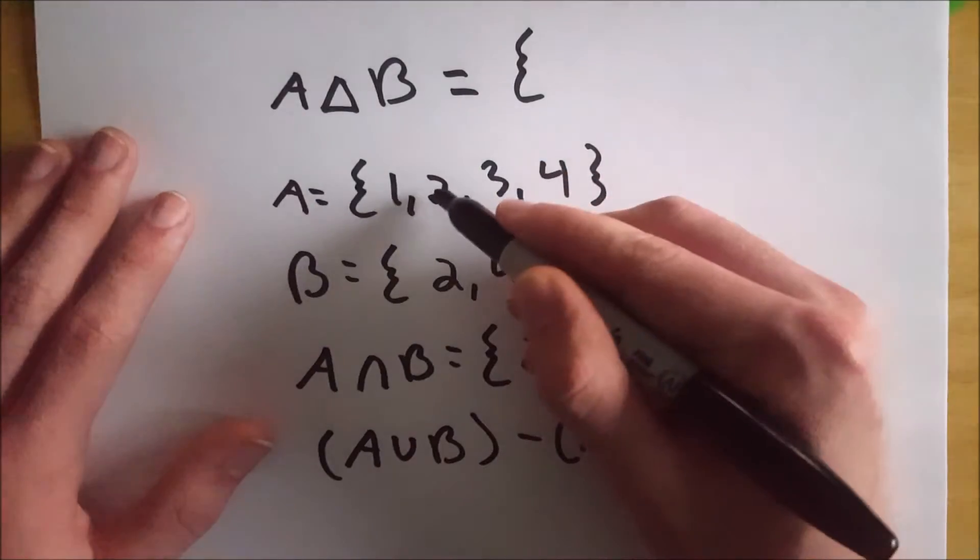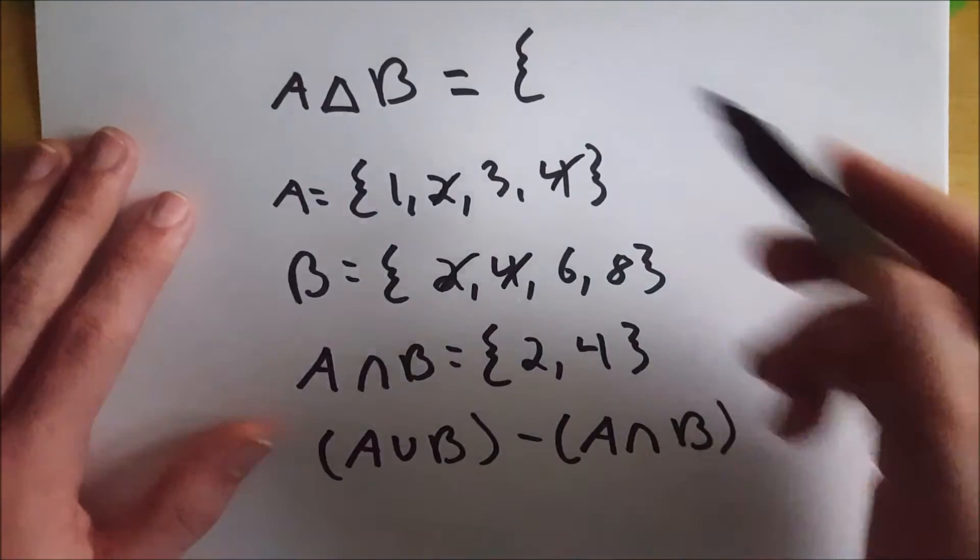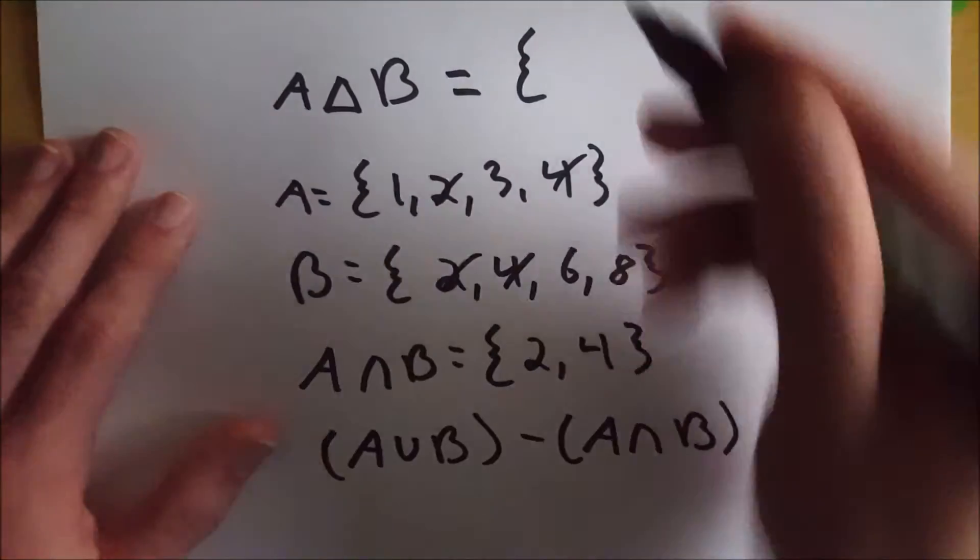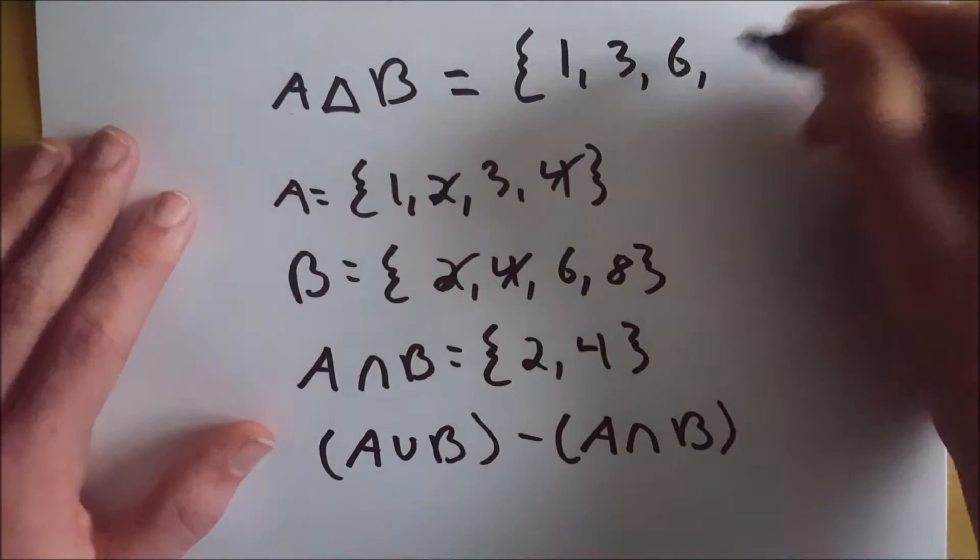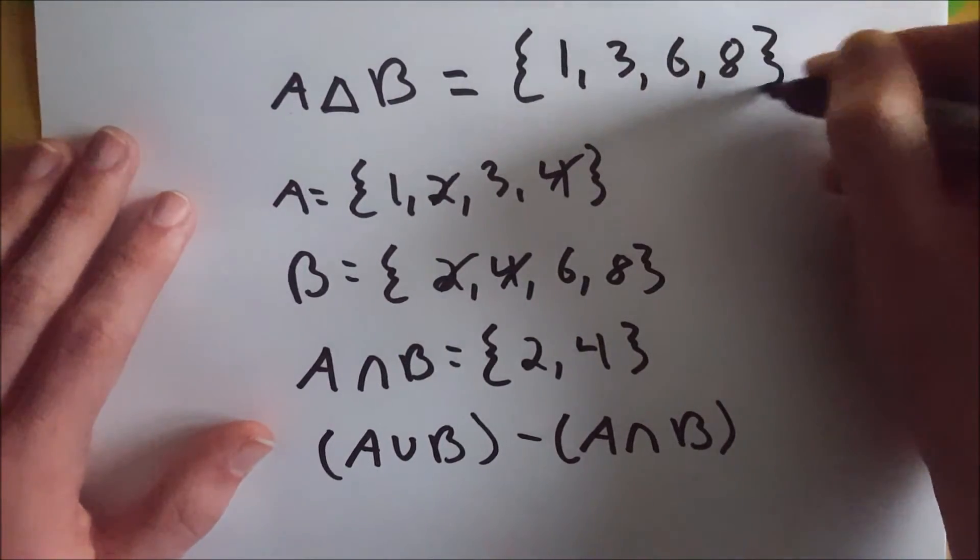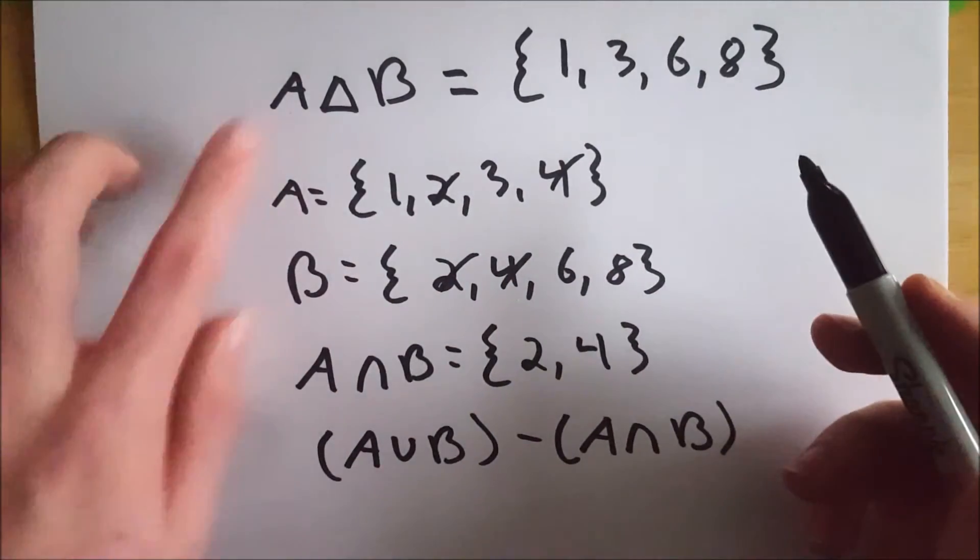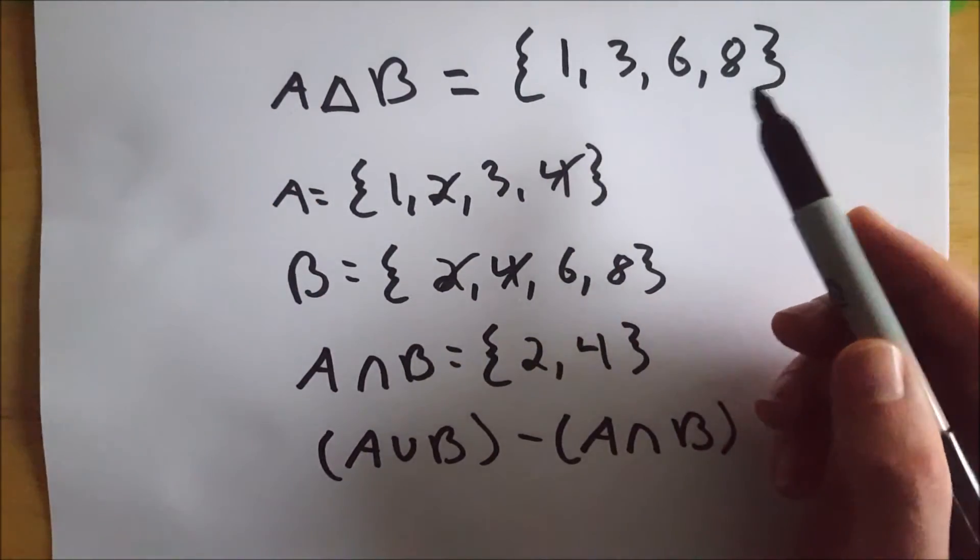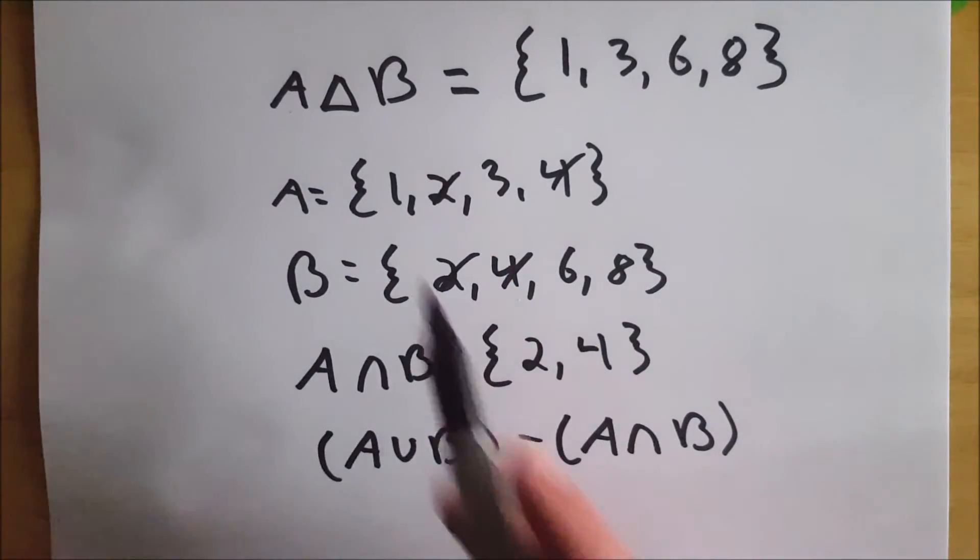So if we take away 2 and 4 from these sets, and then we just put in what's left, that leaves us with 1, 3, 6, and 8. And right there is the symmetric difference of A and B, because these are the elements that are in A or B, but are not in both A and B.